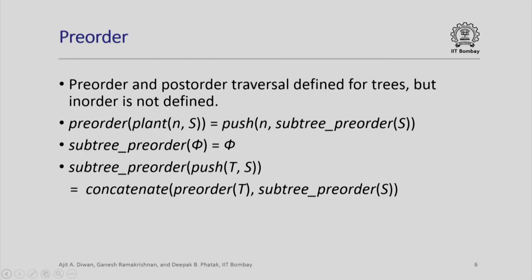Pre-order and post-order traversal can be defined for rooted trees, but not in-order traversal. In-order traversal was defined for binary trees where we traverse the left subtree, then the root, then the right subtree. This was possible because there were only two subtrees, but with any number of subtrees we do not know where to place the root. So there are only two orders: pre-order, where we place the root first and then recursively traverse all subtrees; and post-order, the other way around. To define pre-order, we define a helper operation called subtree-pre-order, which takes a sequence of trees and concatenates their pre-order traversals.